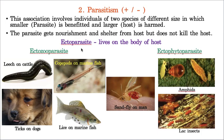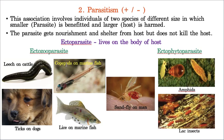Ectoparasites are of two types: ectozoaparasites (animal parasites living outside) and ectophytoparasites (plant parasites living outside). Examples of ectozoaparasites include leeches that suck blood from cattle without entering their body, ticks on dogs that attack from the outside, sand flies, and mosquitoes that bite from outside and suck blood. These are all ectozoaparasites — they live outside the animal body.